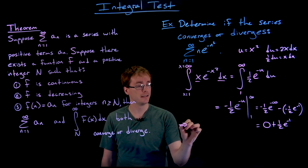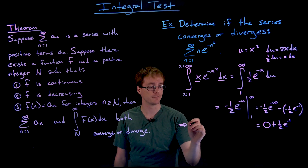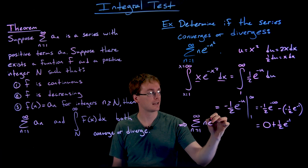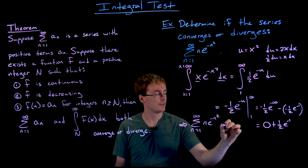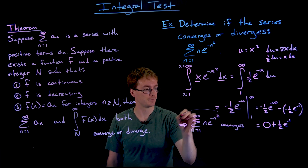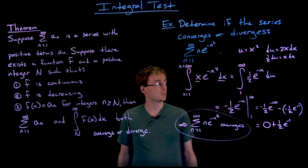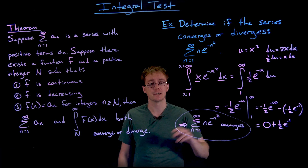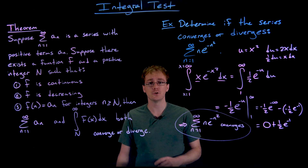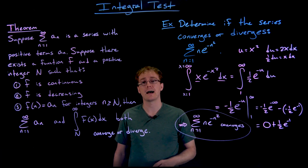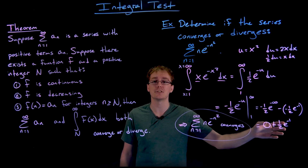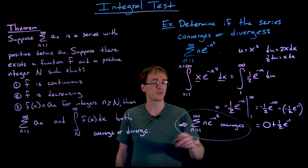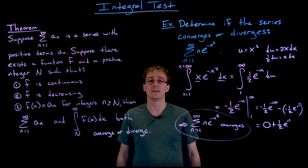And so what that tells us then is that our original series must also converge. So the series that is the sum from n equals 1 to infinity of n times e to the negative n squared is convergent. By the integral test, we know that our series is going to be convergent. We do not know what it converges to. We cannot say that this series converges to 1 half times e to the negative 1. This may be a decent approximation to our series, but it is not the sum of our series. And we'll talk more about approximating the sum of our series through something like the integral test in another video.